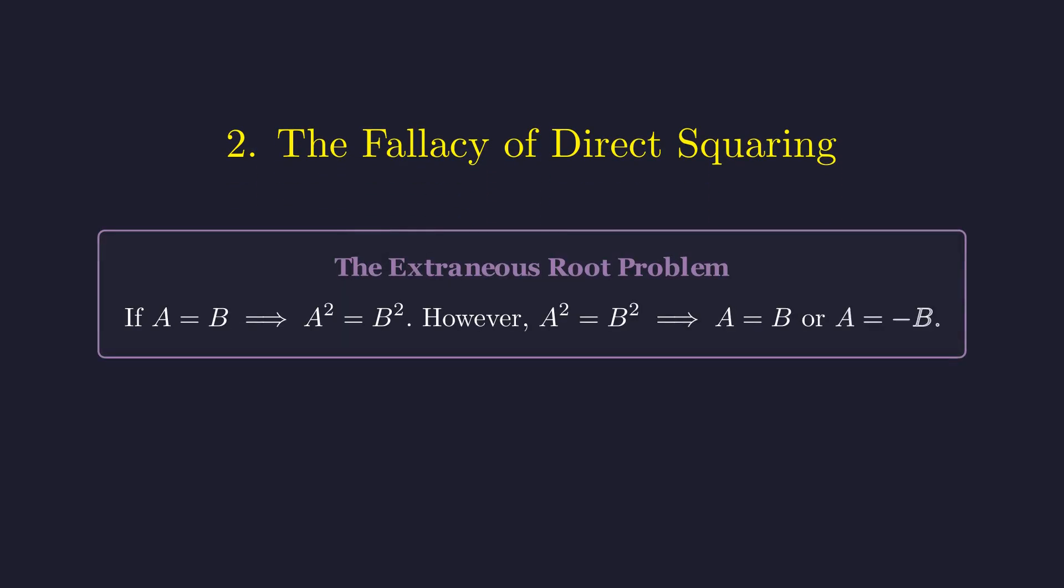Your first instinct might be to square both sides to eliminate the square root. But this seemingly innocent step creates a serious problem. When you square both sides, you're not just solving your original equation. You're also solving the case where the left side equals the negative of the right side. This injects fake solutions that don't belong.